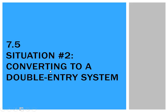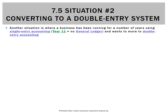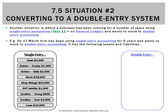Our second situation where the general journal will be needed is converting to a double entry system. It's going to be a bit confusing. What you're going to remember is in year 11 if you did accounting you learned what was called a single entry system, which meant no ledgers — no T accounts in the general ledger. What we want to do now is move from that system on the 17th of March to what's called a double entry system.